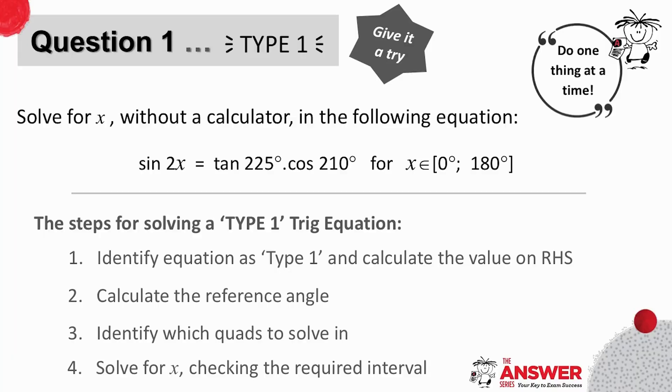We'll start here with an example of type 1. We are asked to solve for x without the use of a calculator. The first thing here is to recognize this trig equation as a type 1 example. A ratio equals a value.